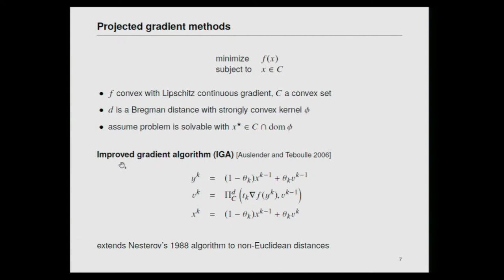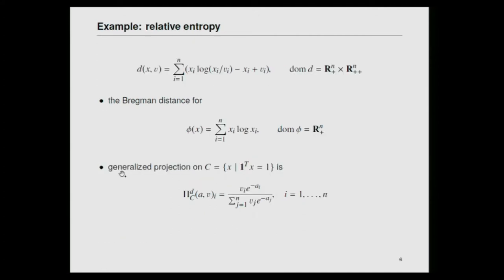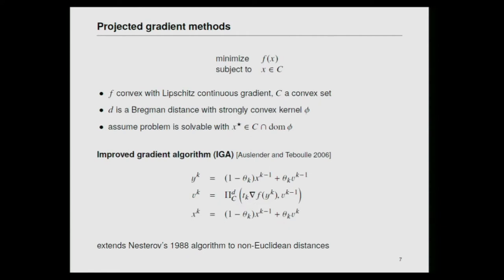An example of a method we will use later is the improved proximal gradient method by Auslender and Teboulle — an extension of an accelerated Nesterov method to Bregman distances. It applies to minimizing a smooth convex function f over a convex set C. The standard proximal gradient step in Nesterov's method is replaced by a generalized Bregman proximal step. The result of the projection must always lie in the interior of the domain, because it is used as the second argument in the next iteration. This algorithm achieves 1/k² convergence, the same as Nesterov's methods.